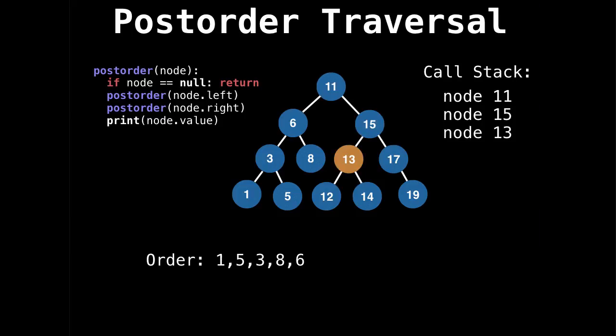Don't print 11 because we still need to do its right subtree. Go to 15, 13, 12, print 12, go up to 13, print 14, go back up to 13. And now we can print it. Don't print 15 yet because we haven't explored all of its right subtree. Then go to 17, 19, and then pop everything off the stack and print on the way back up. And you can see that 11 is indeed the last node we have visited.